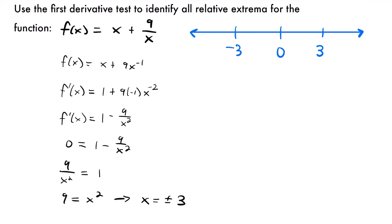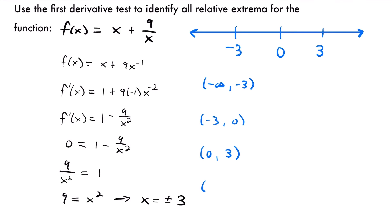This gives us four different intervals to test: from negative infinity to negative 3, from negative 3 to 0, from 0 to positive 3, and from positive 3 to positive infinity. Now we'll test a value in each of these intervals to see if the slope is negative or positive.